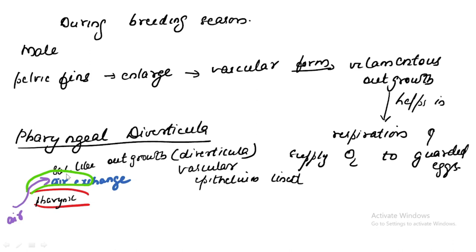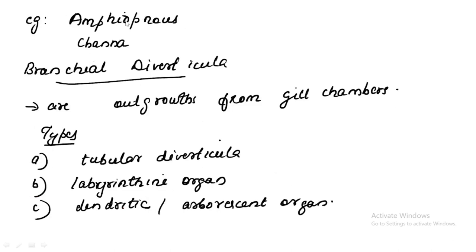Regarding pharyngeal diverticula, some outgrowth forms from the pharynx externally. Its wall is highly vascular. When air enters this sac, fresh oxygen is supplied and carbon dioxide is taken away. The example of a fish with pharyngeal diverticula is Amphipnous and Channa. Branchial diverticula are outgrowths of the gill chamber, modified into a respiratory structure to assist respiration.